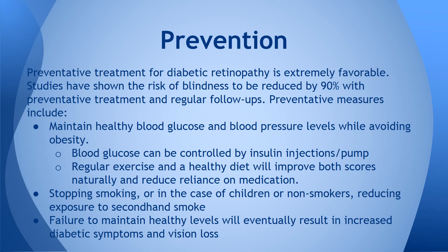In addition to regular follow-ups, people at risk should maintain healthy levels and stay at a healthy weight. Insulin and blood pressure medication can help control these levels, but it's better to avoid dependency through regular exercise and eating a healthy diet. If those aren't enough, you can supplement with medication, but the less reliance on medication, the better. If anyone at risk is smoking, they should stop. If children have parents who smoke, parents should do their best to reduce their child's exposure to secondhand smoke. If glucose levels aren't controlled, the risk of diabetic illness and vision loss increases greatly.